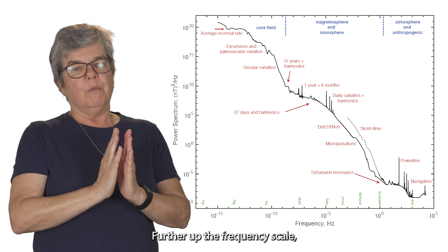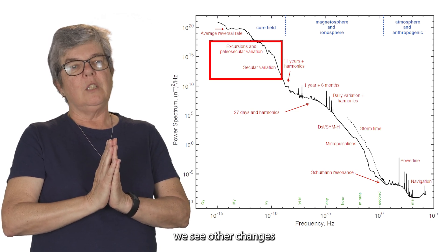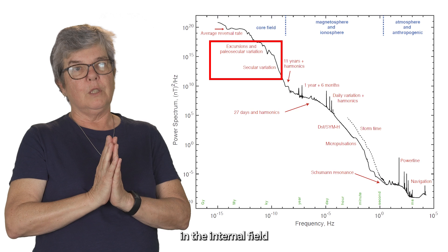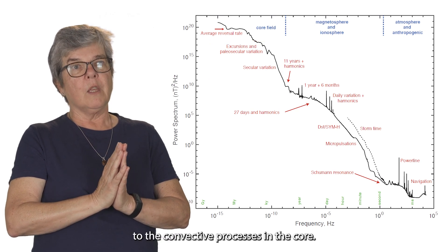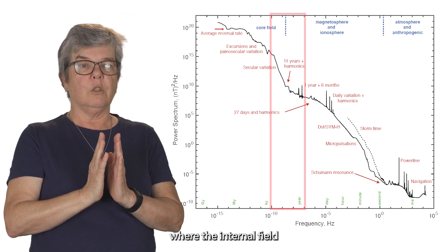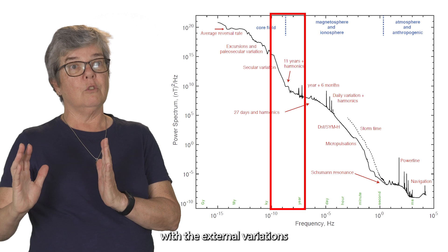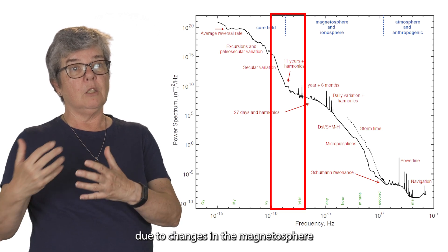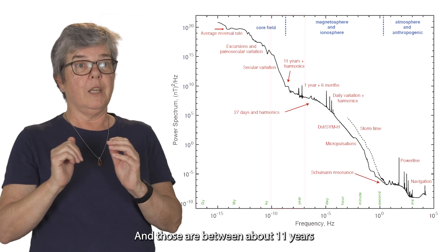Further up the frequency scale, so at shorter periods, we see other changes in the internal field that are due to the convective processes in the core. And as we move even further up, we get to this place where the internal field variations overlap with the external variations due to changes in the magnetosphere and the solar wind. And those are between about eleven years and a day.